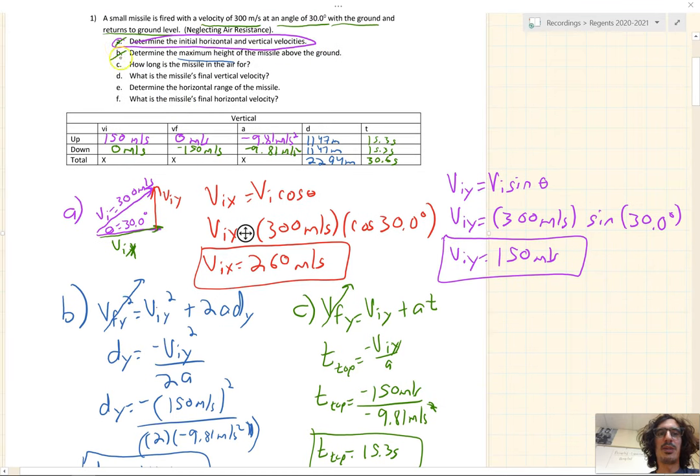We did A, we did B, we did C. Letter D, what is the missile's final vertical velocity? Well, we already calculated it. It's negative 150 meters per second. It's negative the initial vertical velocity.